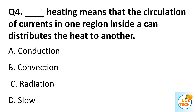Question 4. Dash heating means that the circulation of a current in one region inside a can distributes the heat to another. A. Conduction. B. Convection. C. Radiation. D. Slope.